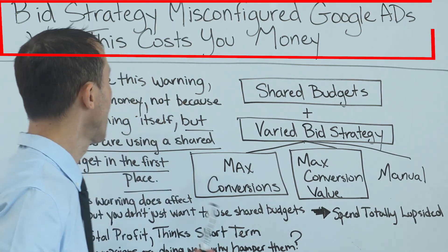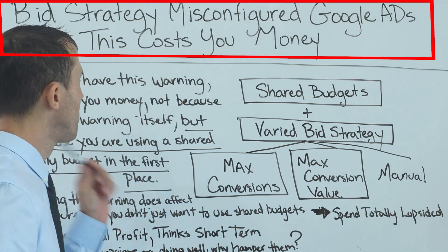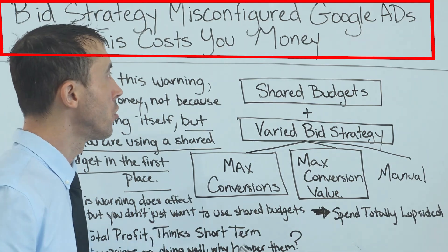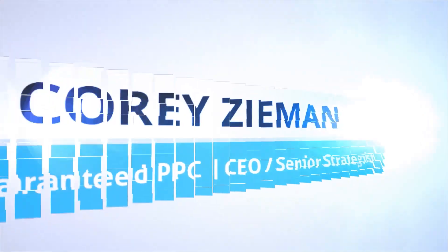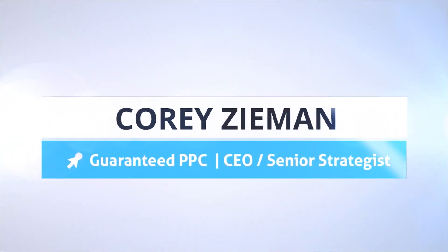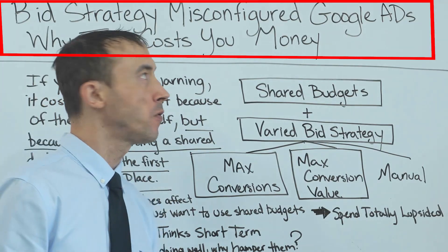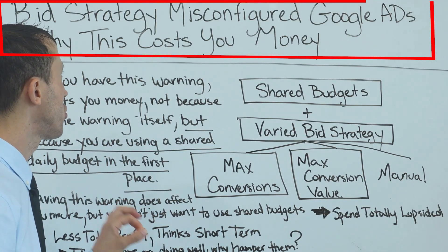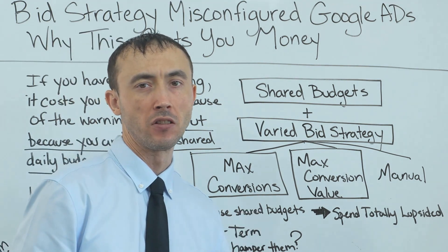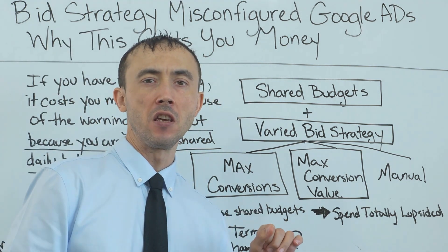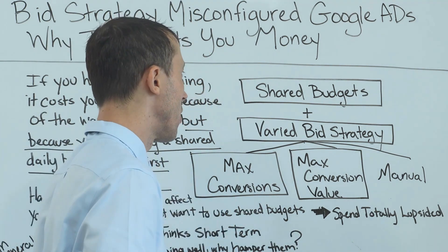In today's video, we're going to talk about bid strategy misconfigured Google Ads — why this costs you money if you have the warning 'bid strategy misconfigured Google Ads' showing on the campaign status inside your account.